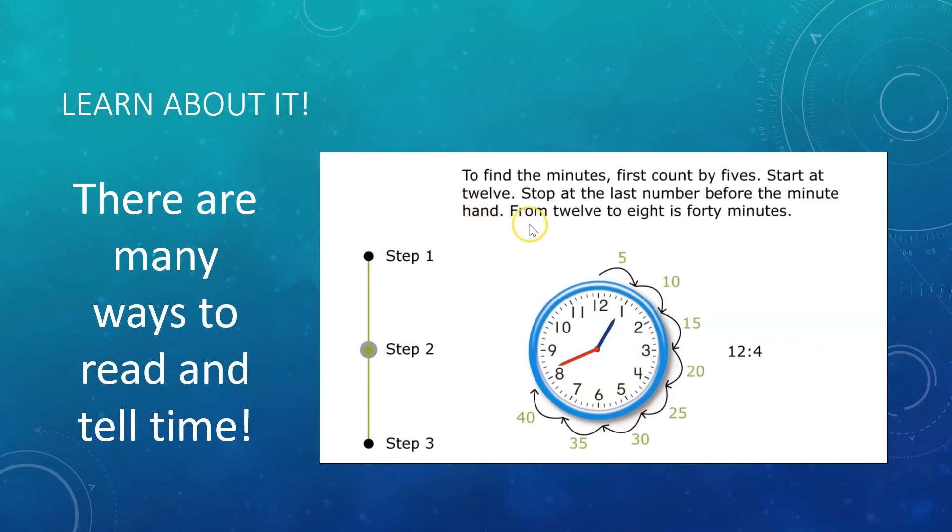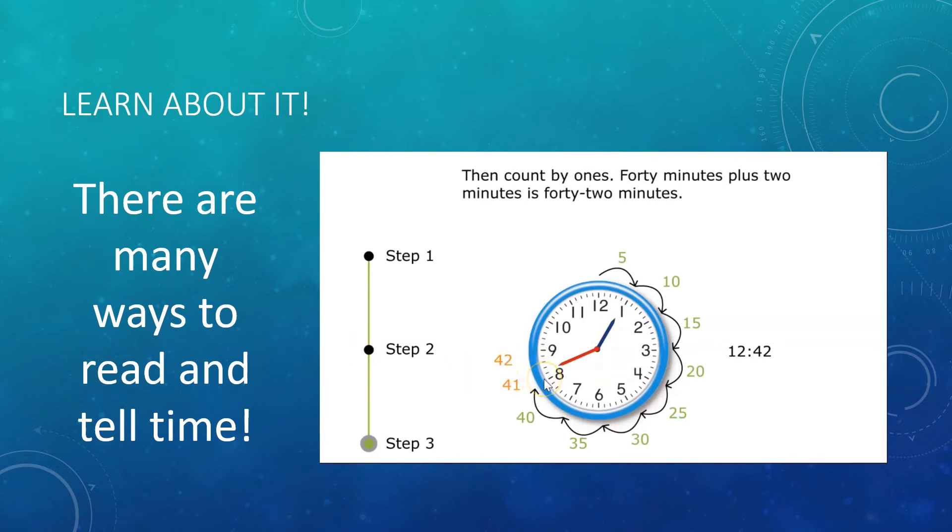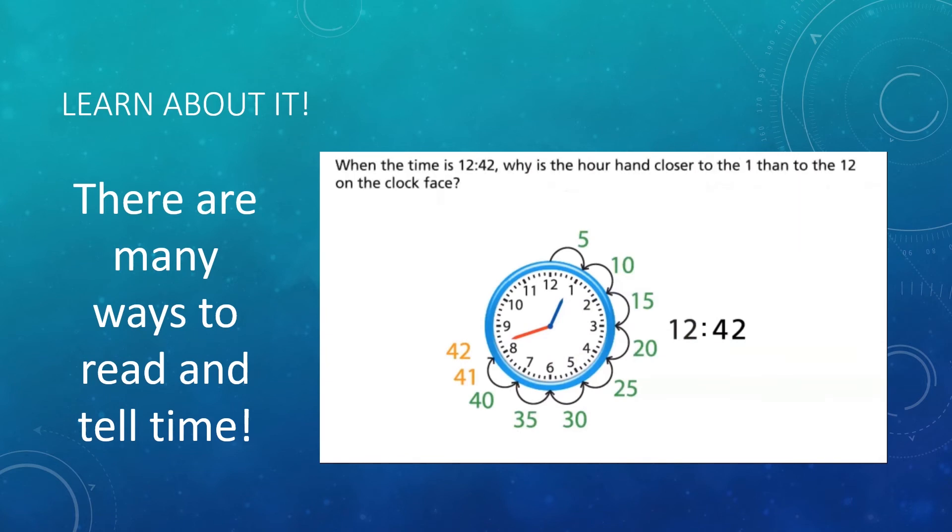To find the minutes, count by fives until we get to our minute hand. From there, we can count on one minute increments until we get to where our minute hand is pointing. When the time is 12:42, why is the hour hand closer to the 1 than to the 12 on the clock face? There are 60 minutes in one hour. Because 42 minutes is more than half or 30 minutes of an hour, the hour hand will be between the 12 and the 1, but closer to the 1.